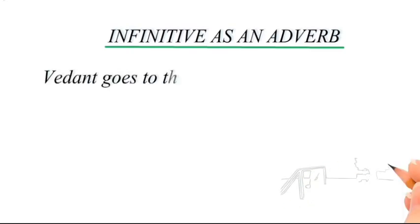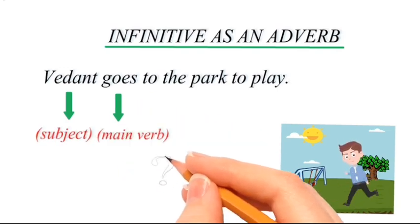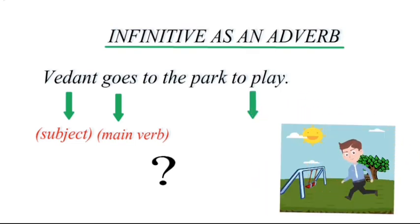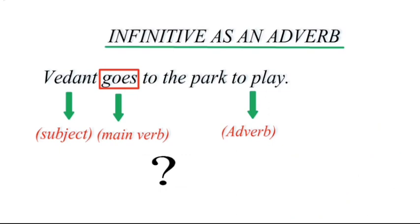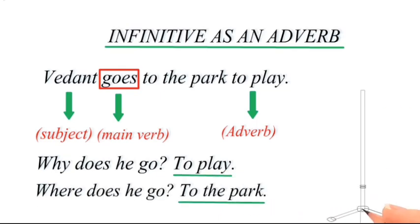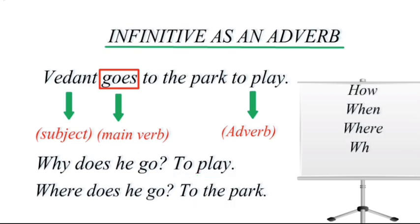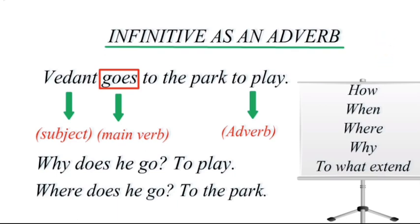Now the infinitive functioning as an adverb: 'Vedan goes to the park to play' — 'Vedan' is the subject, 'goes' is the verb, and 'to play' is an adverb answering why he goes. There are two adverbs here: why does he go — to play, and where does he go — to the park. An adverb always answers how, when, where, why, or to what extent.